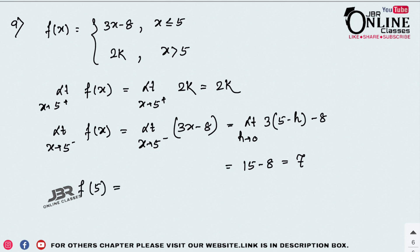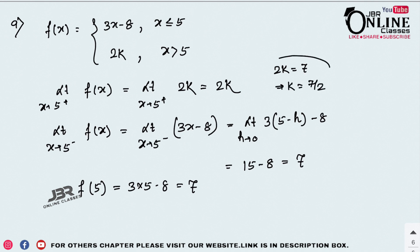Also f(5) = 3(5) - 8 = 7. For continuity, 2k = 7, so k = 7/2. That is your answer.